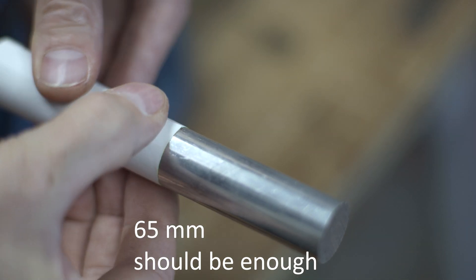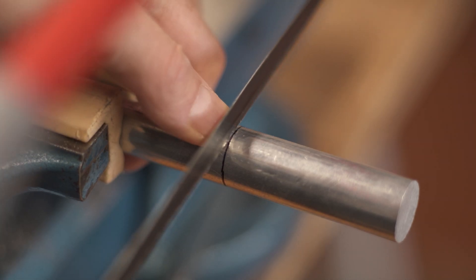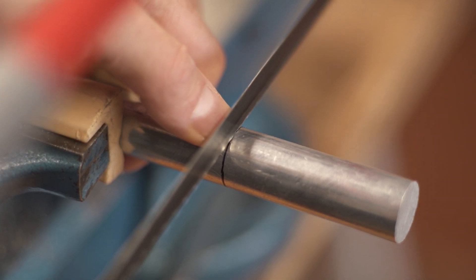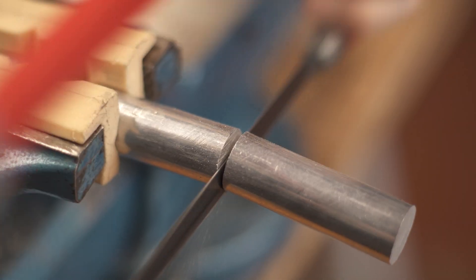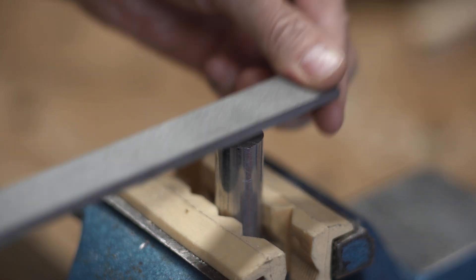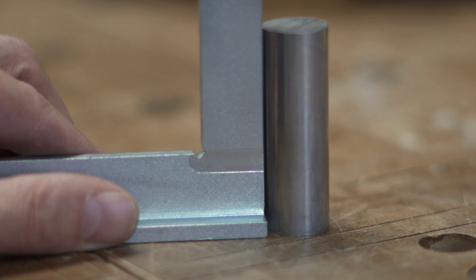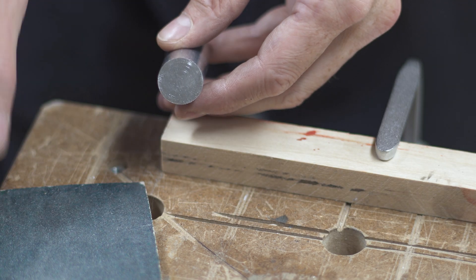Draw a line around the rod using a piece of paper. Make sure the surface is perpendicular. Find the middle with a piece of sandpaper.